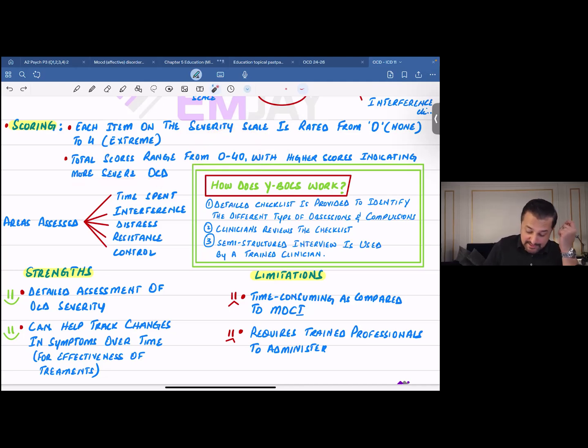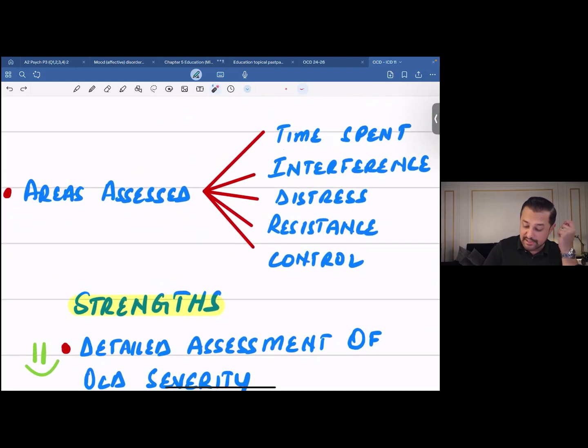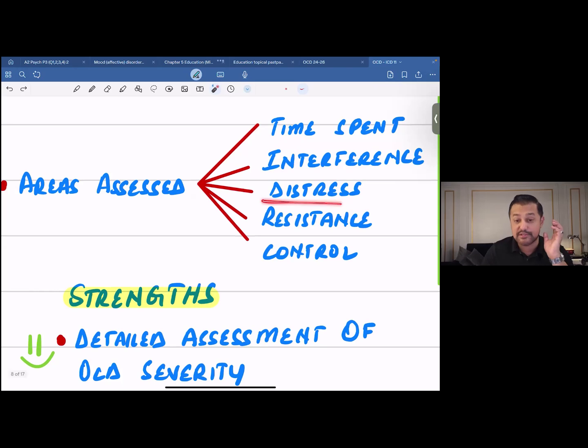About the areas that are assessed: the amount of time that is spent, the extent to which your obsessions and compulsions interfere with your day-to-day routine, the extent to which you experience distress, the extent to which you try to resist it, and the lack of control you experience.